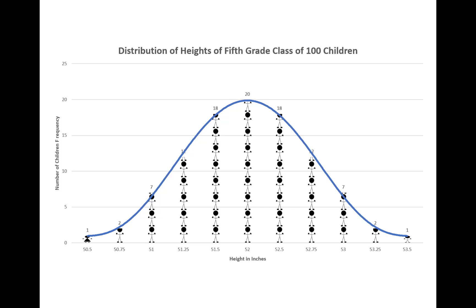To calculate the average height, we did what we always do to find the average: we added up all of the heights and divided by 100. That average is also the very center of the bell curve.